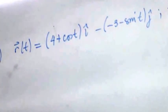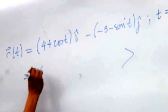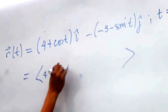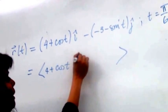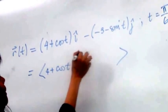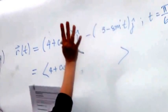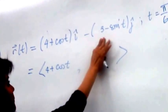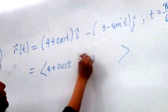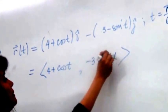R of t is (4 plus cosine t) i minus (negative 3 minus sine t) j. Those of you who don't like that notation, we can write the first component as 4 plus cosine t, and the second component becomes negative 3 plus sine t — wait, actually it's positive 3 minus sine t.